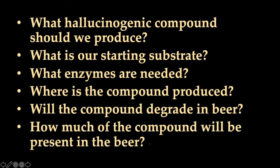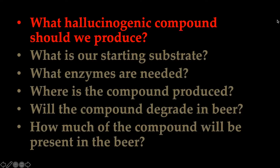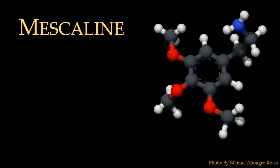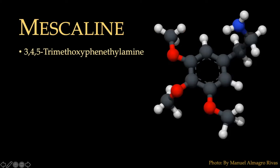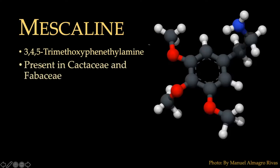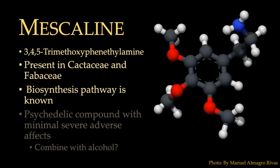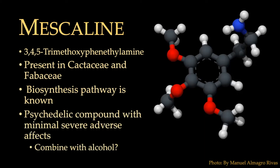What hallucinogenic compound should we produce? LSD sounds wonderful but it's chemically complex — let's go with something simpler: mescaline. Mescaline is a relatively simple compound with four functional groups on a benzene ring, formally called 3,4,5-trimethoxy phenethylamine. It's found in the cactus family (Cactaceae) and bean family (Fabaceae), its biosynthesis pathway is already known, and it's a psychedelic with minimal severe adverse effects.